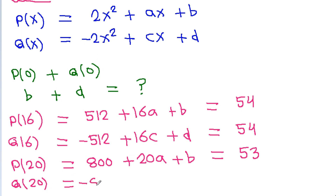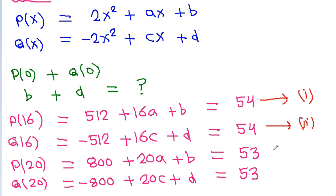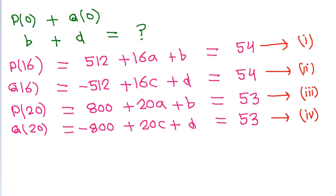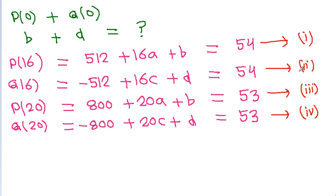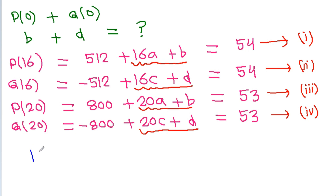Q(20) equals minus 2 times 20 squared — that is minus 800 — plus 20C plus D, which also equals 53. So we have 4 equations and 4 variables: A, B, C, and D, and we have to find the value of B plus D. In equations 1 and 2 we have 16A plus B and 16C plus D, and in equations 3 and 4 we have 20A plus B and 20C plus D. We note that 16 times 5 equals 20 times 4.